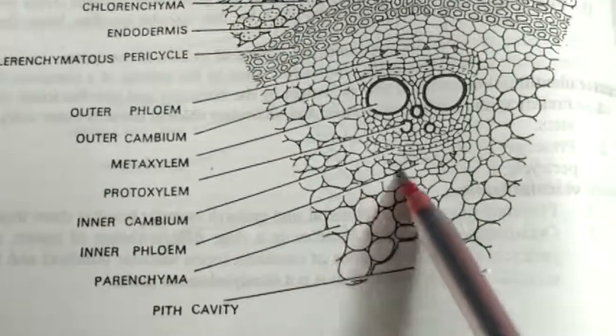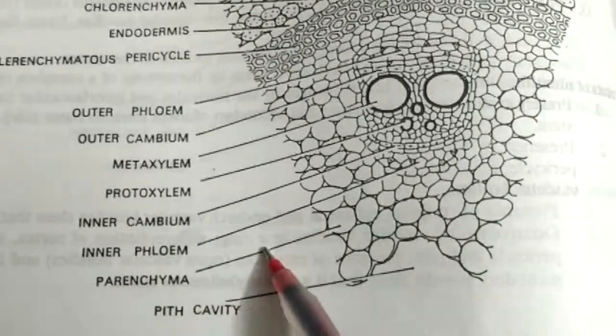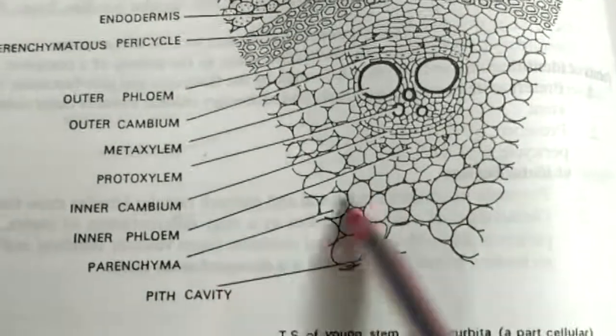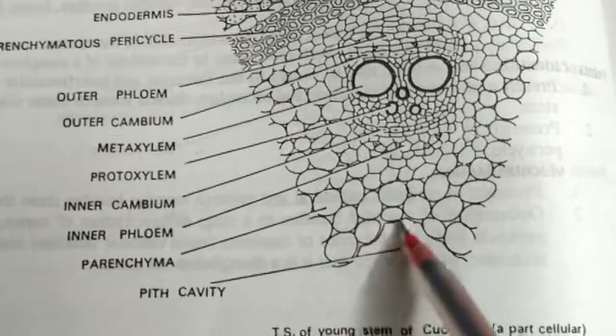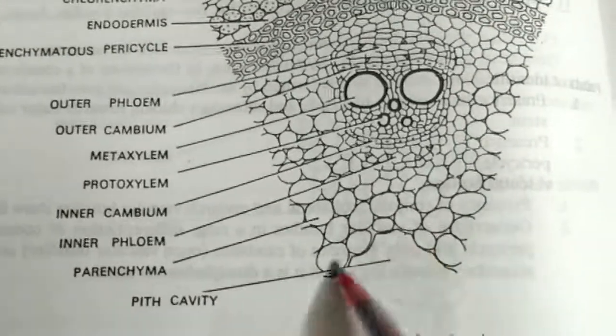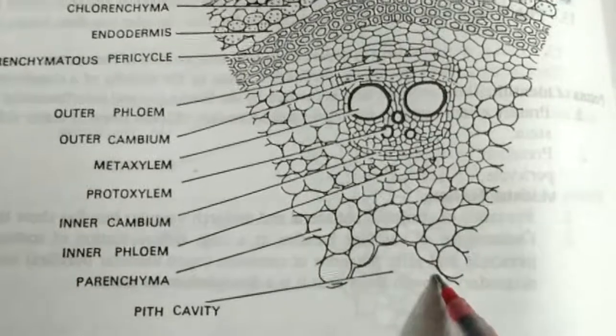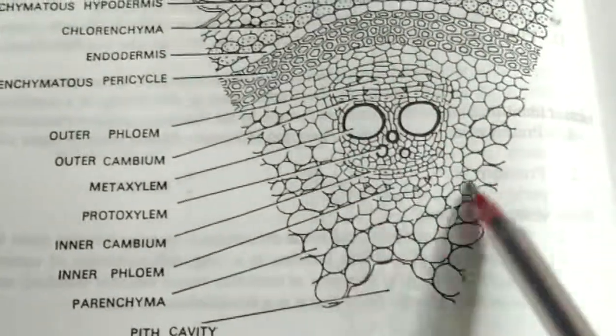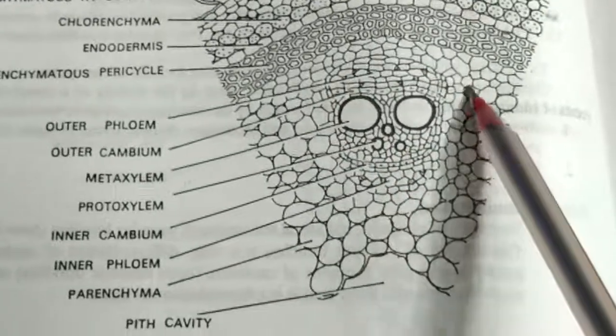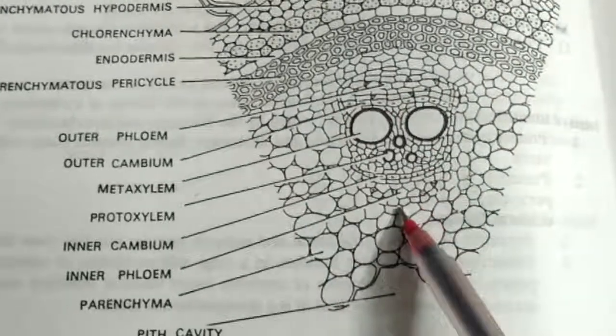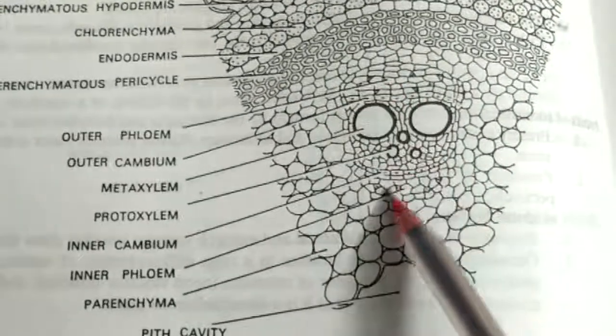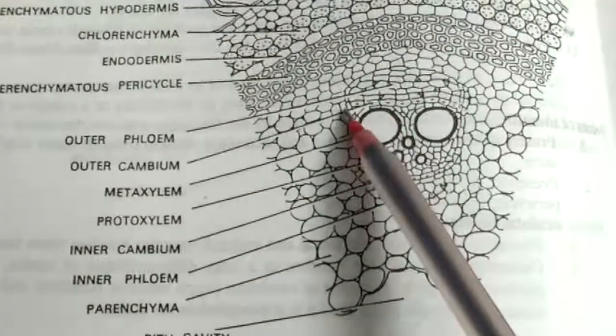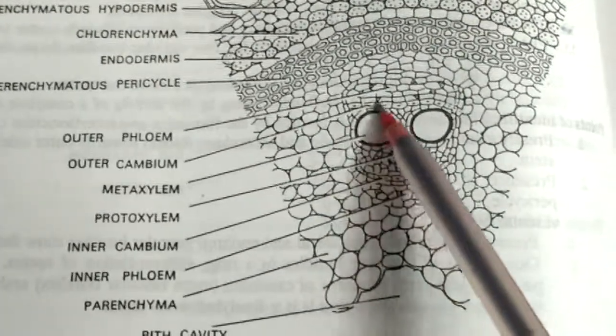And this is parenchymatous ground tissue, and this is pith which is irregular hollow cavity. So bi-collateral, as I have already defined: two phloems are present - outer, inner - then outer cambium, inner cambium, and xylem.